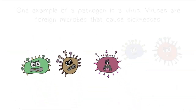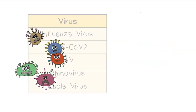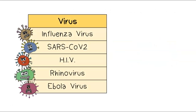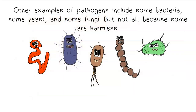One example of a pathogen is a virus. Viruses are foreign microbes that cause sicknesses. Here are some examples of different viruses — each virus causes different symptoms and can lead to different types of sickness in the body.